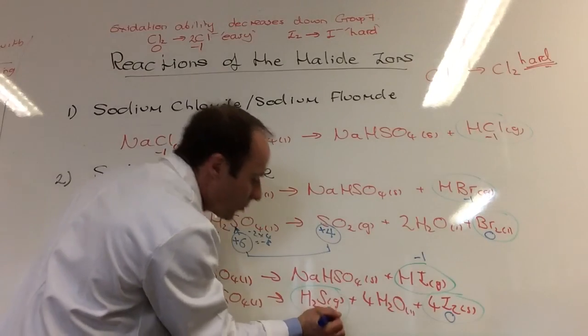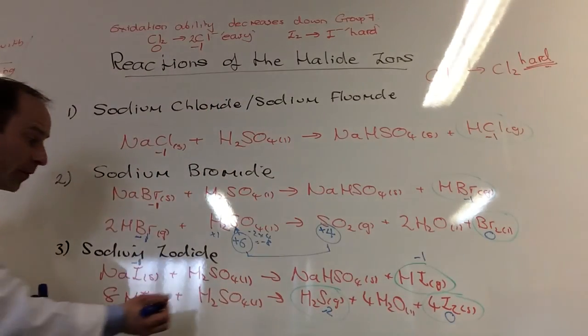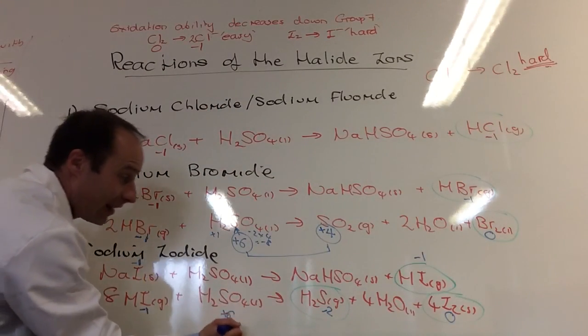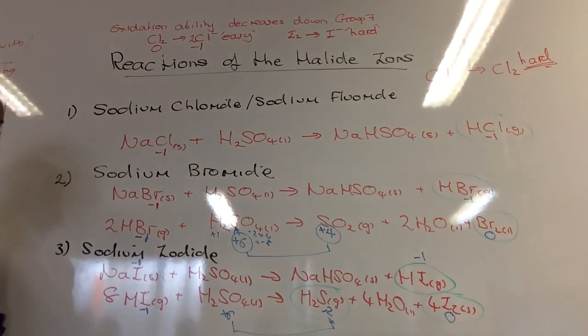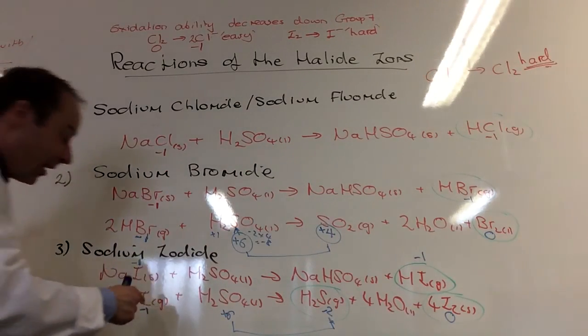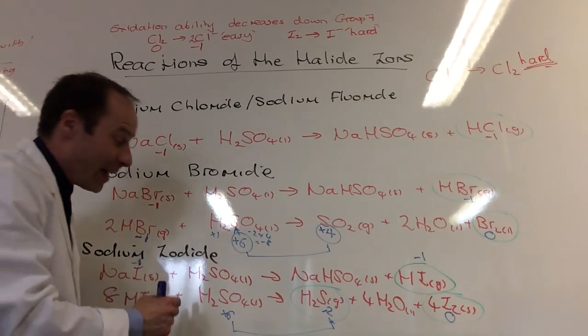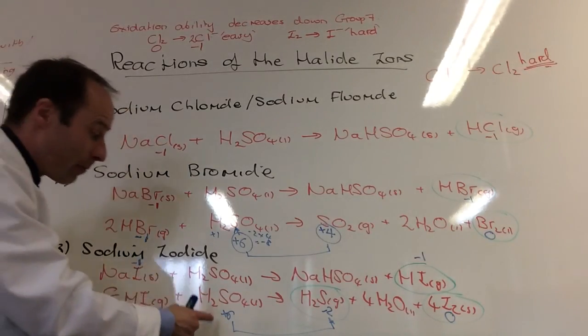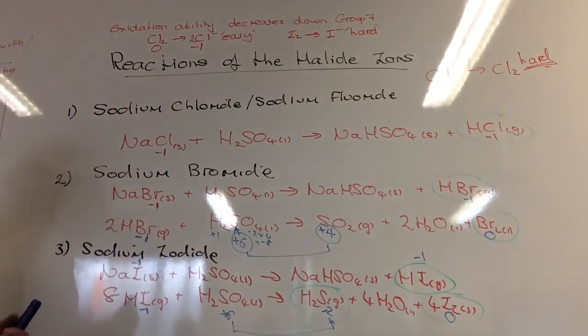Yeah, minus two because hydrogen is plus one. So sulfur, sulfur is still plus six here. Sulfur has gone all the way from plus six to minus two. So iodide, iodine has been able to reduce it all the way down from plus six to minus two.